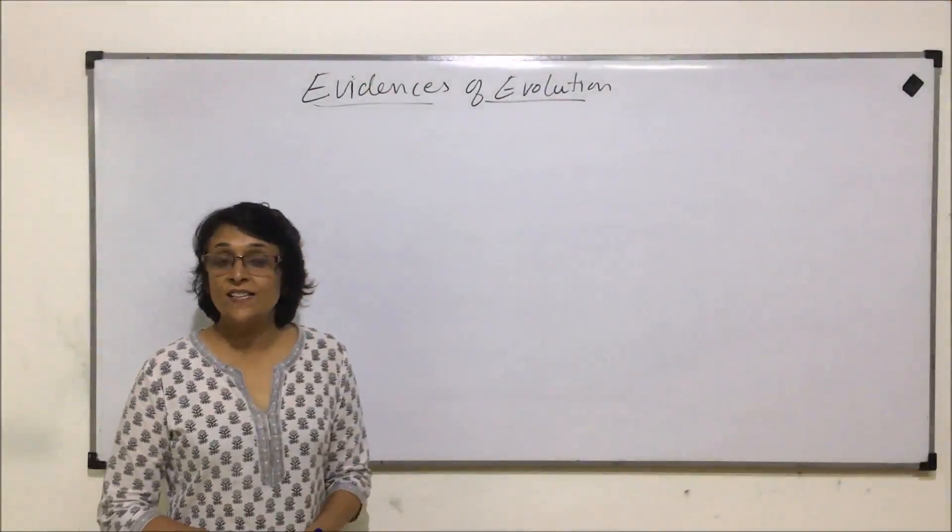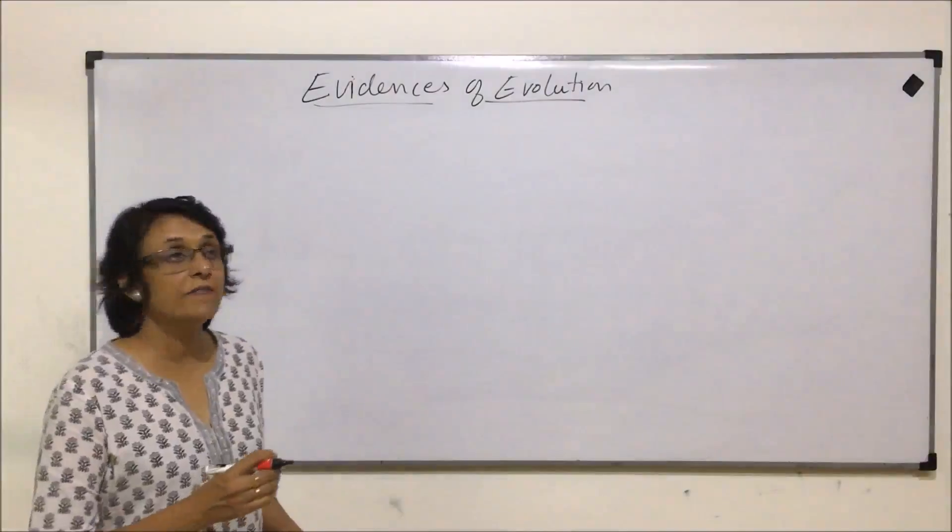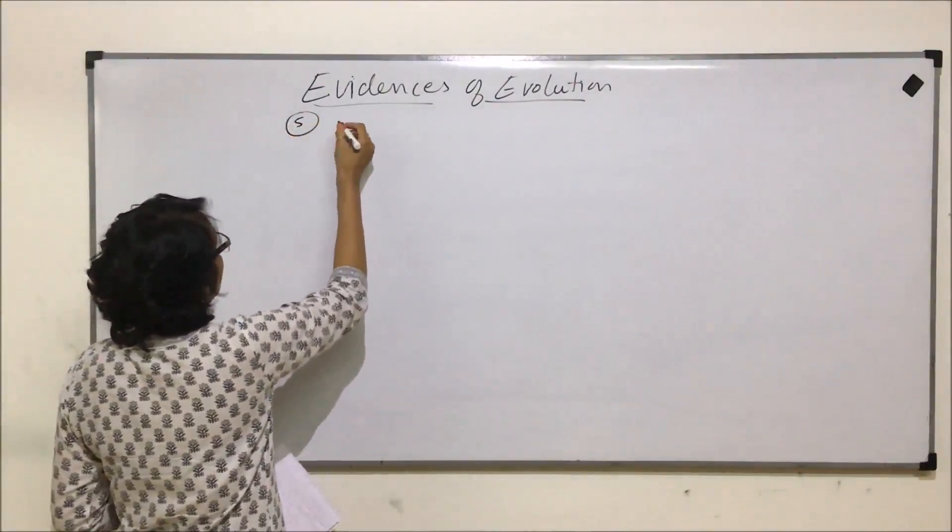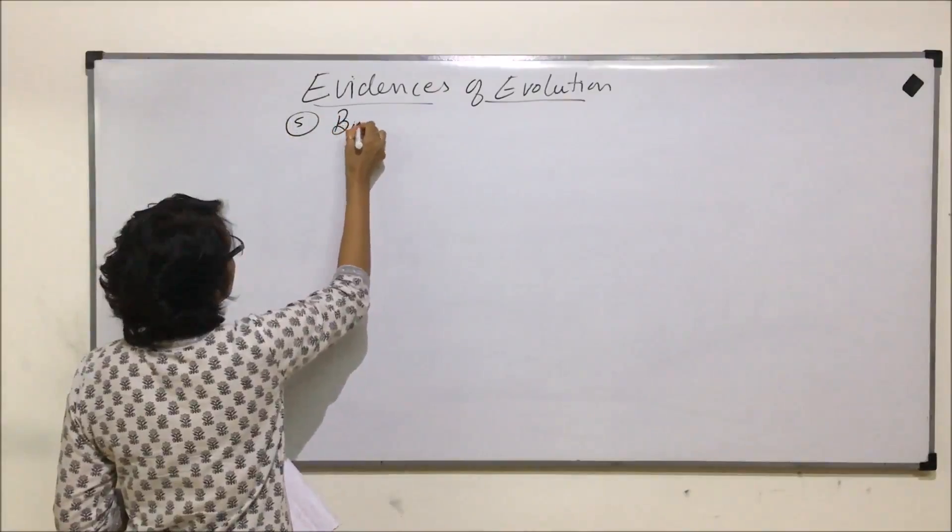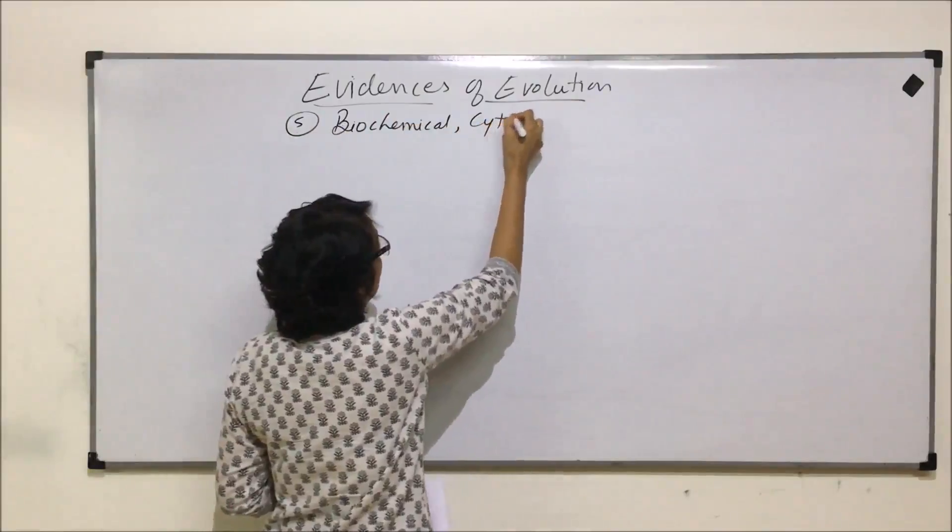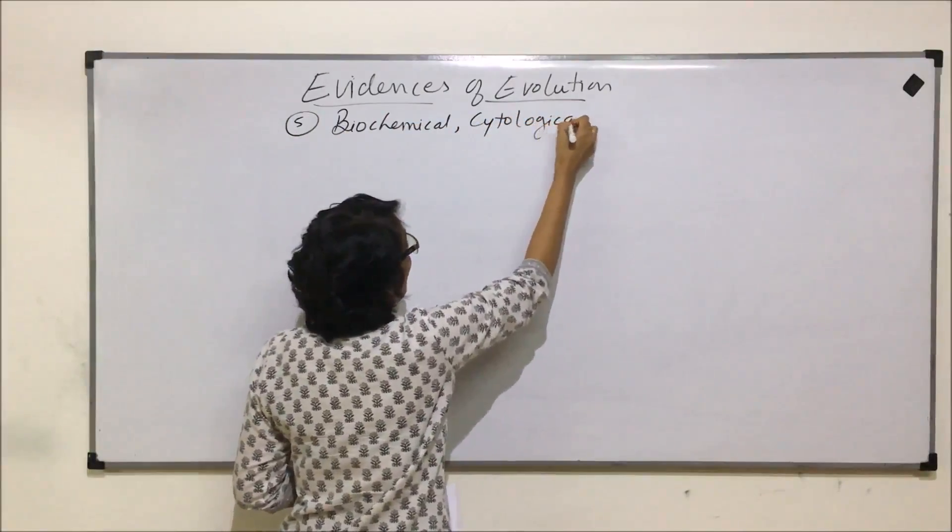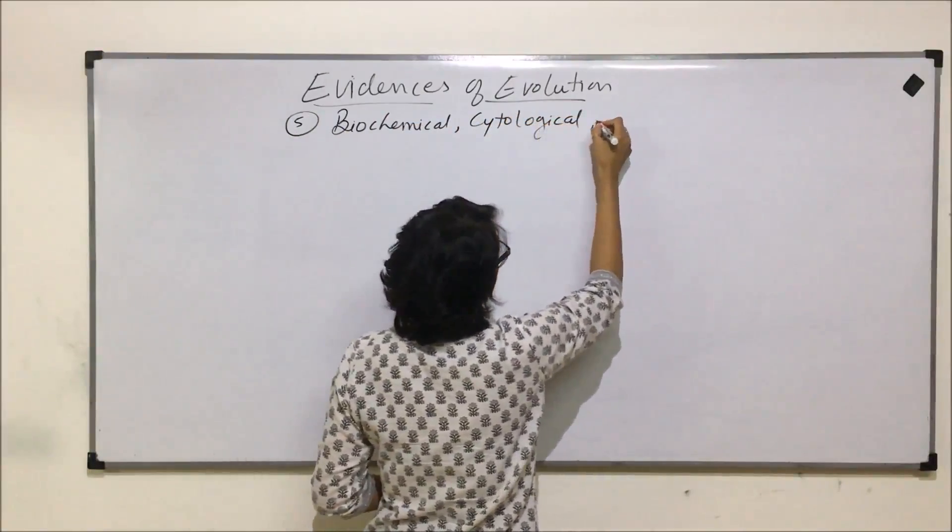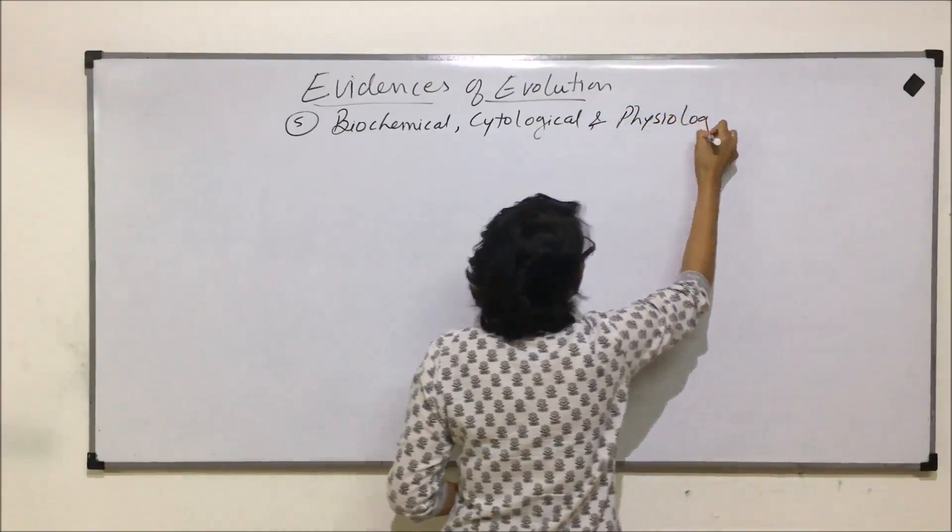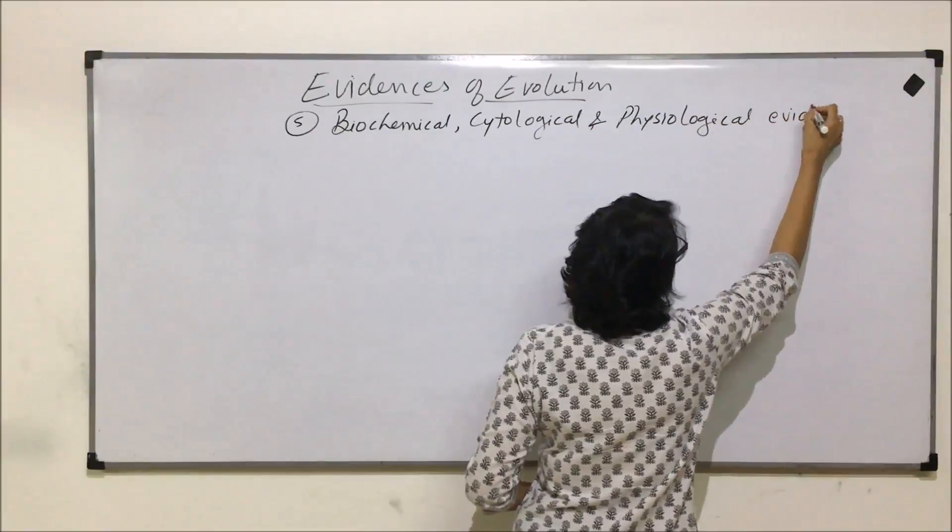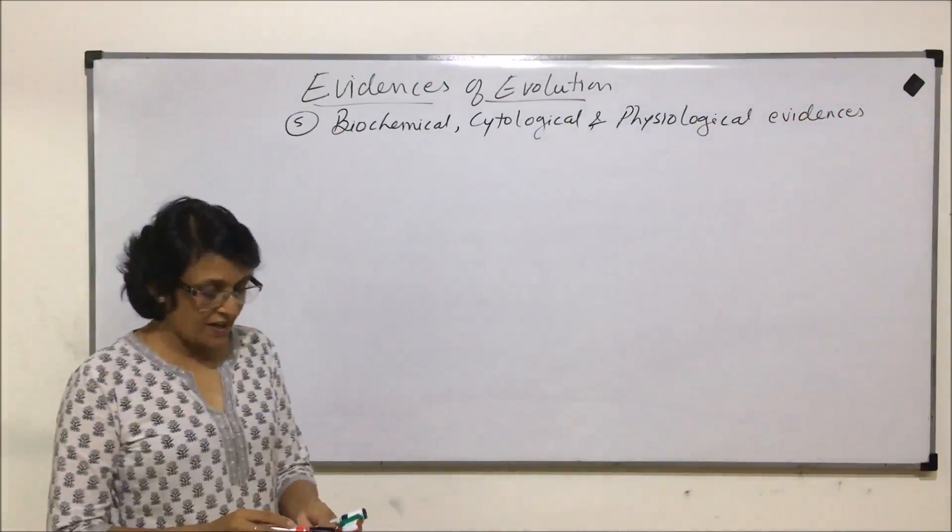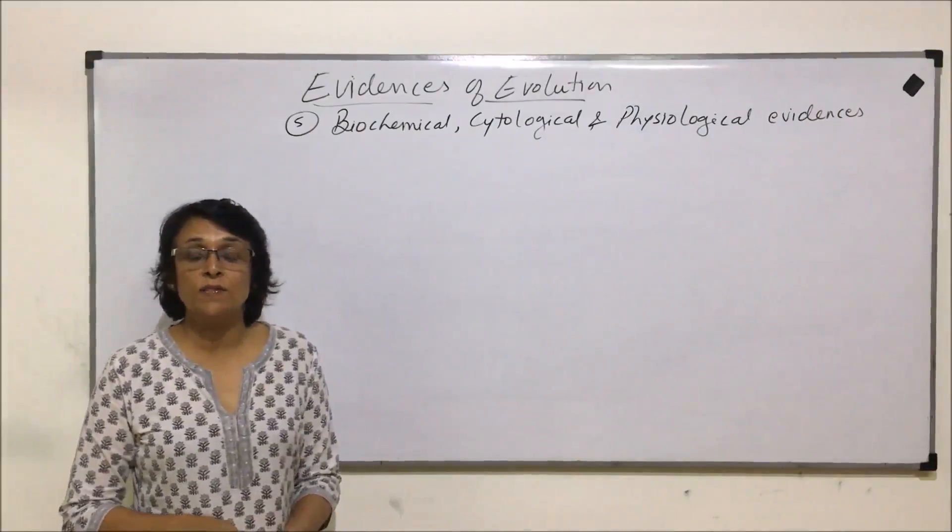We are on the last category of our evidences of evolution, that is the fifth category, and it can be considered as biochemical, cytological, and physiological evidence. So we have combined all these - various kinds of compounds, biochemical substances, certain cytological things, and some metabolic examples or evidences.